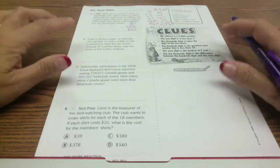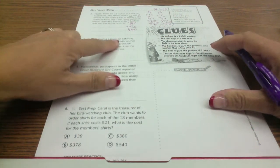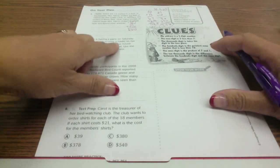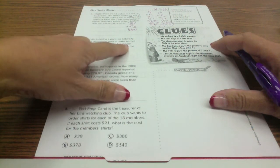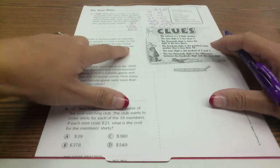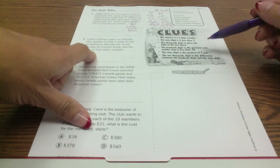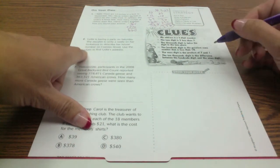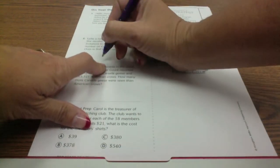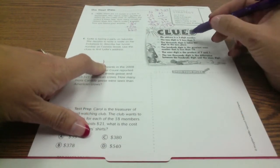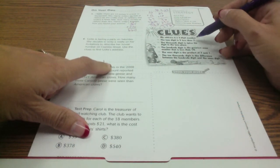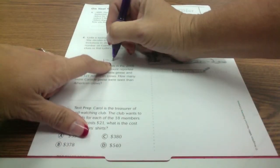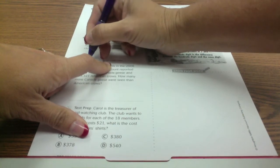All right, now it's Lydia's turn. She's in our class. Lydia is having a party on Saturday. She decides to write a riddle on her invitation to describe her house number. Use the clues over here to find her address. So my address is a five-digit number, so we know I'm going to put the comma.